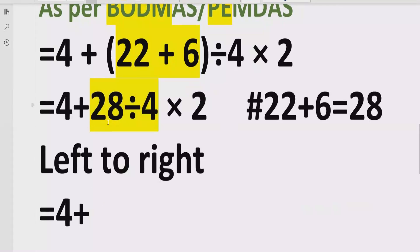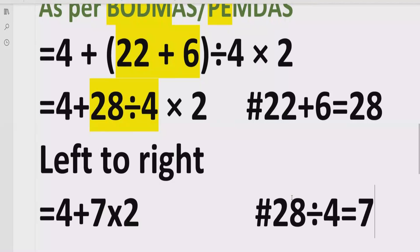So when we divide 28 divided by 4, we will get the answer is 7. So the answer of this division is 28 divided by 4 equals to 7. Multiply by 2, we will write as it is. And here we will give the reference 28 divided by 4 equals to 7.